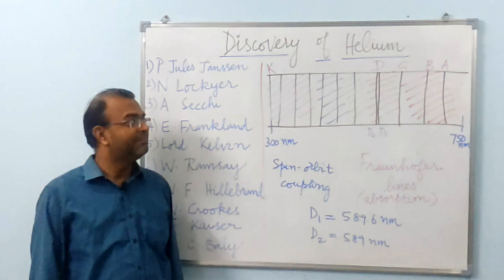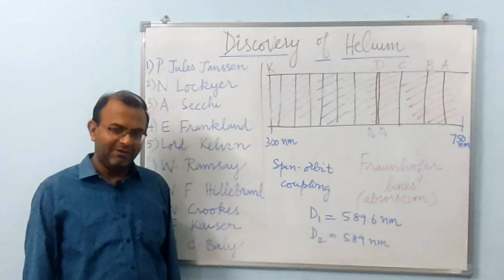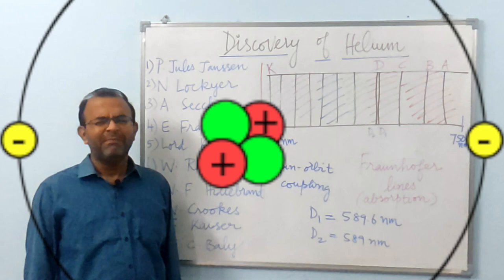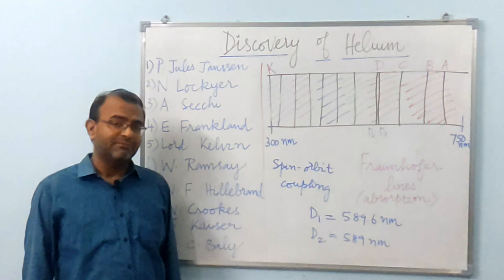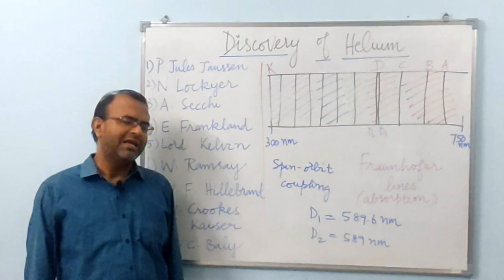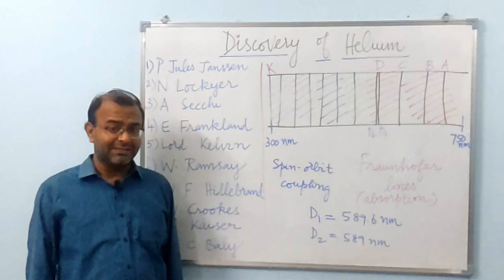Helium, the second member of the periodic table, was surprisingly not known till the later part of the 19th century. Being the second lightest and the second most abundant element in the observable universe, one would think that its discovery was confirmed only in 1895. It was not a momentous discovery, but rather a discovery that occurred over a period of time.